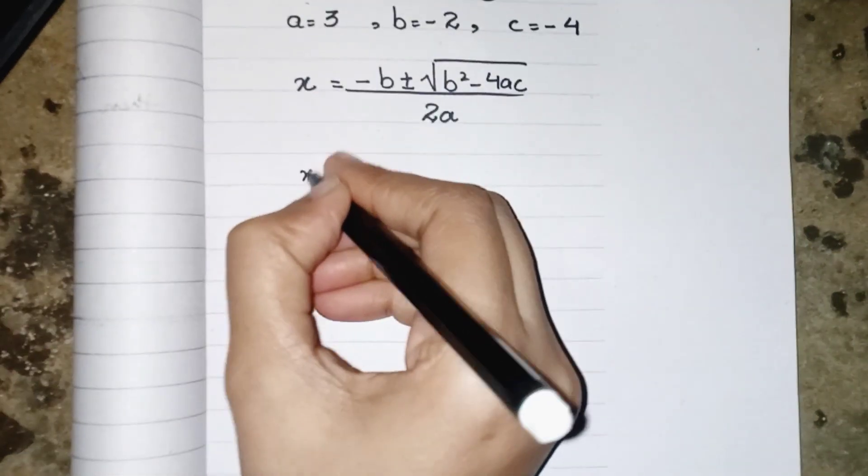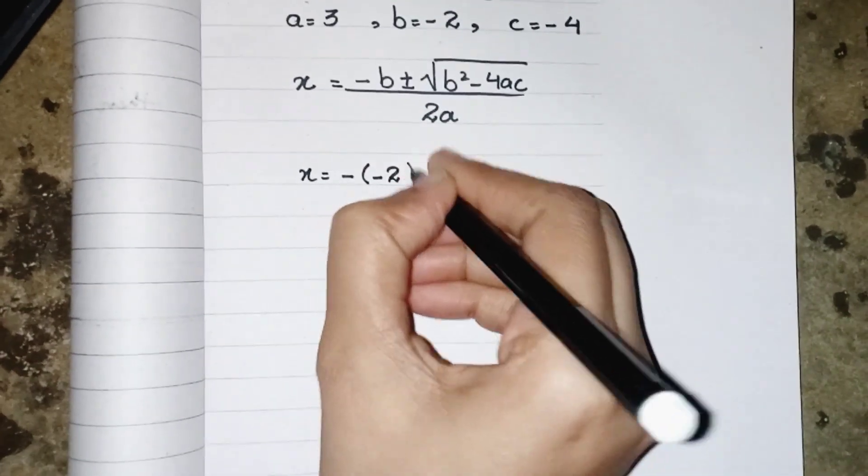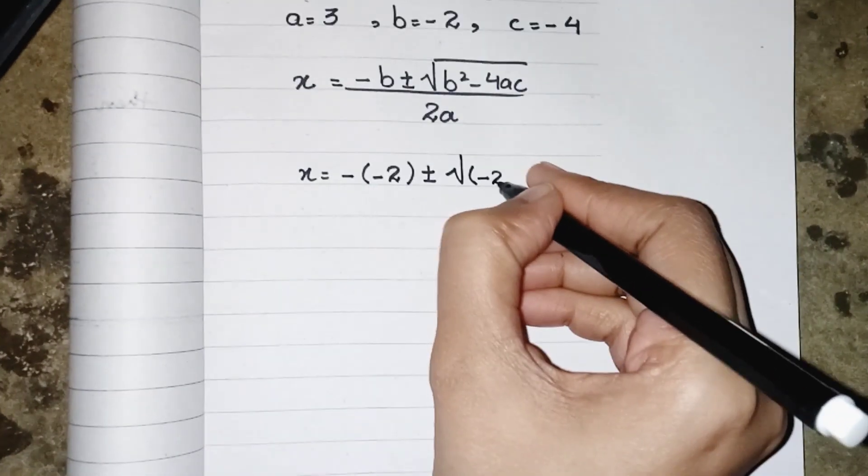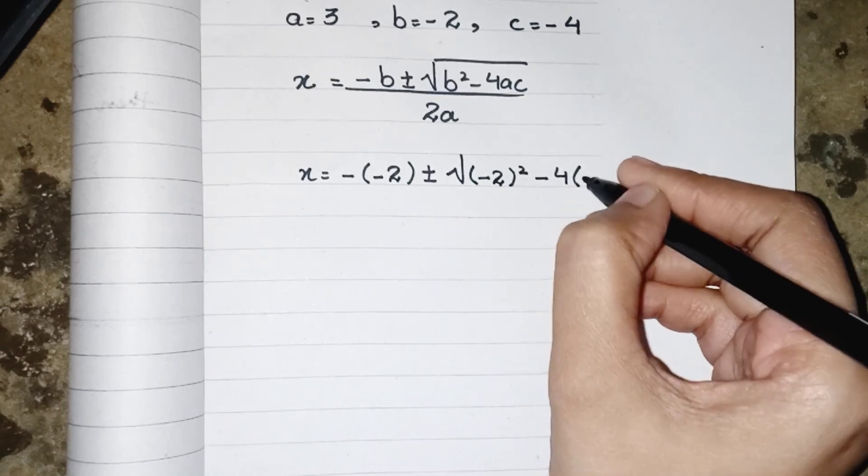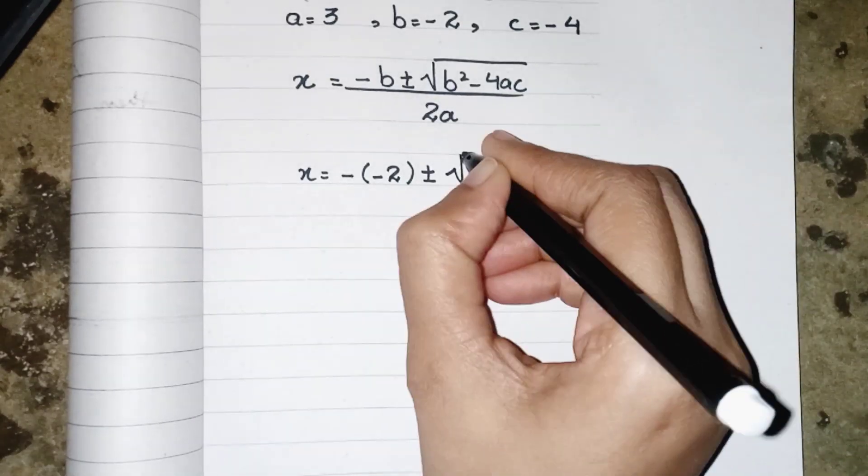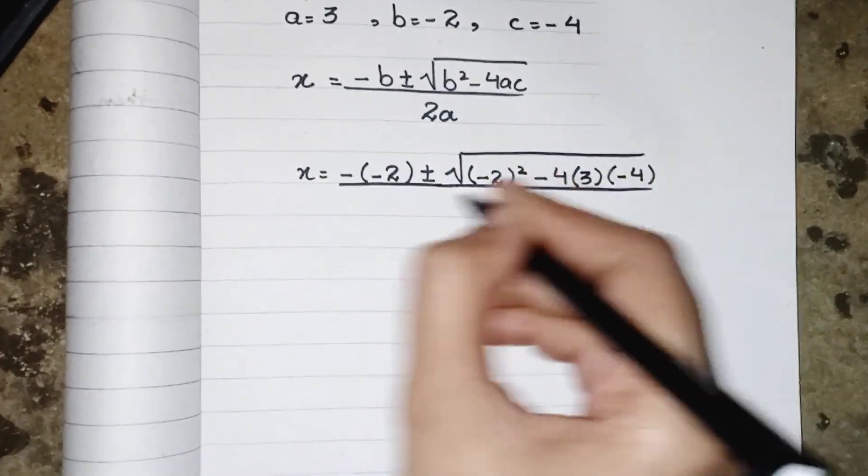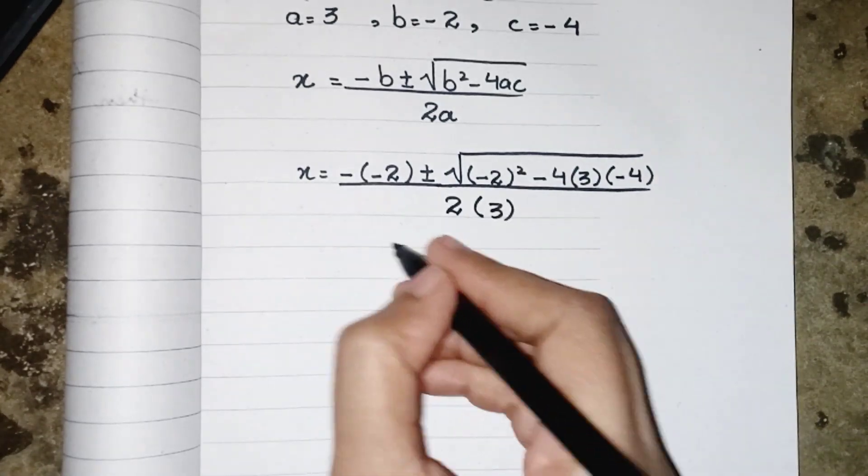x equals to minus the value of b which is -2 plus minus under root b². So we have to put the value of b which is -2 minus 4. The value of a is 3 and c equals to -4 upon 2a. So a equals to 3.